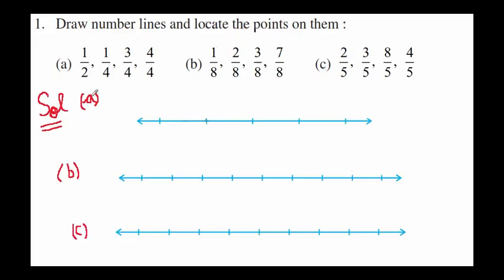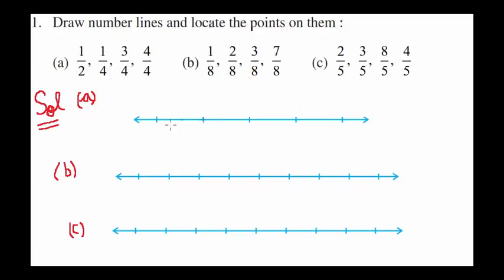A has been divided into four equal parts because the denominator has four parts. Second, eight. Similarly, third is a bit typical. One over two would be at the middle, at the center, because left-hand side and right-hand side have equal number of points.